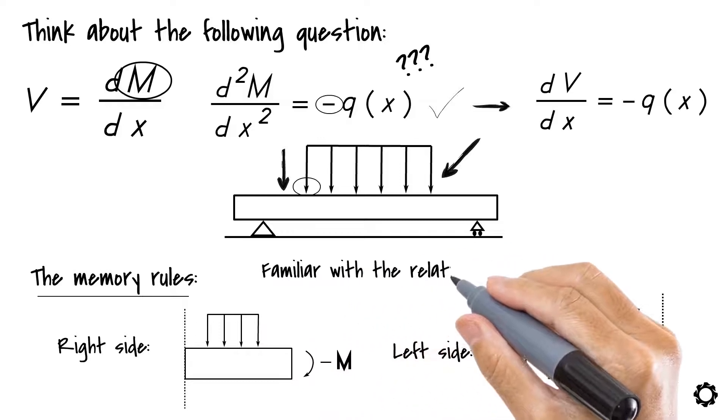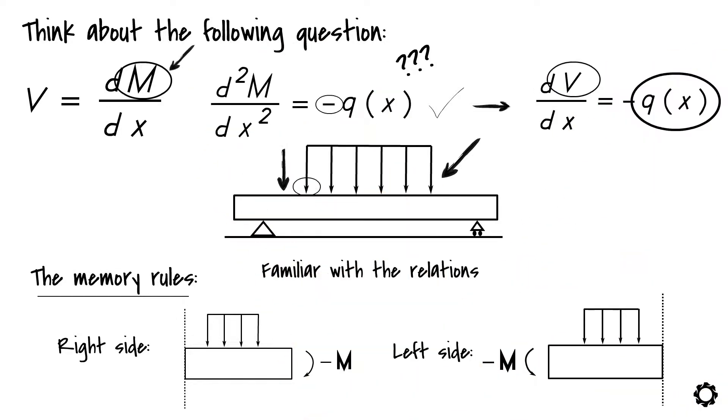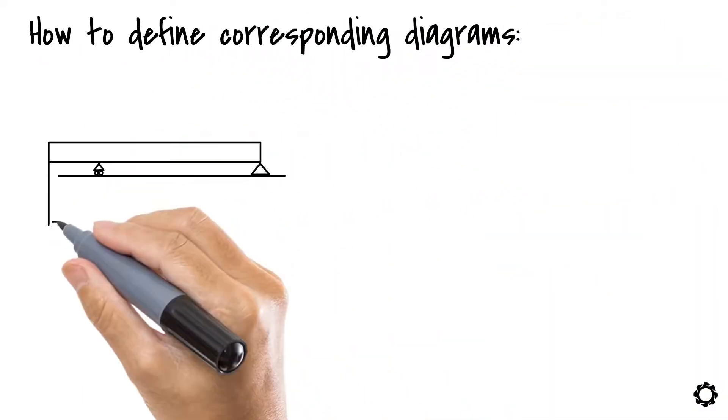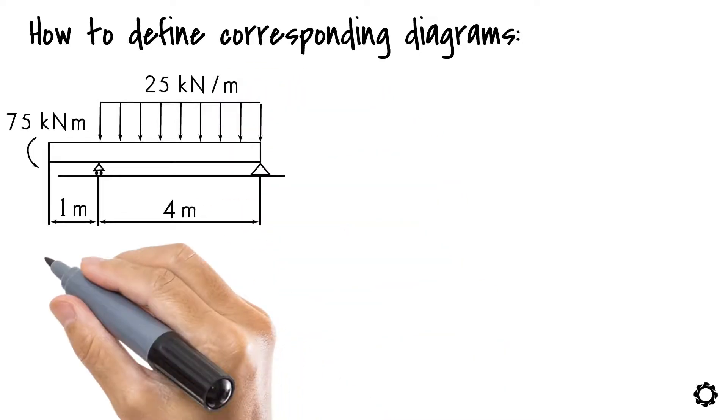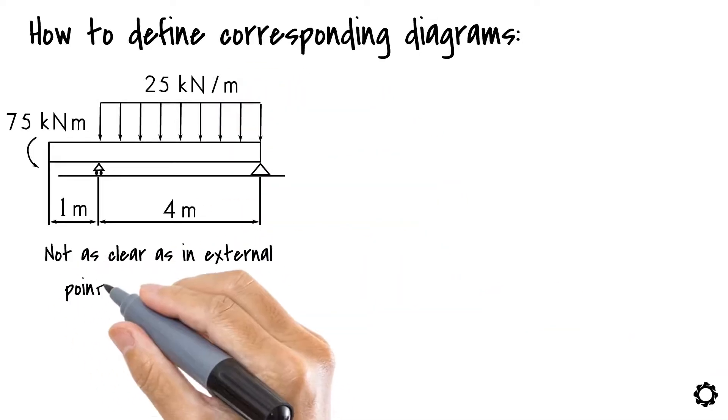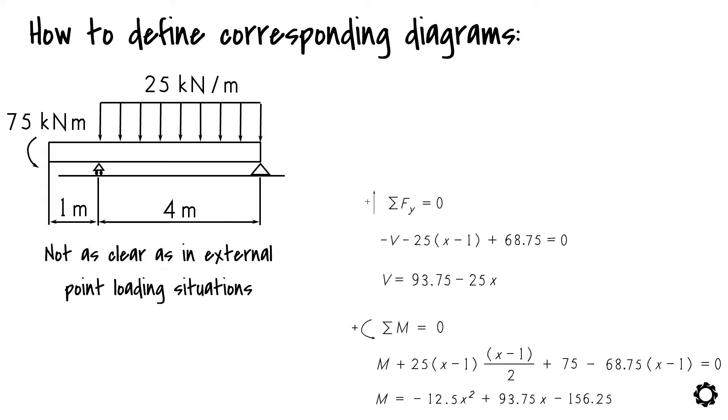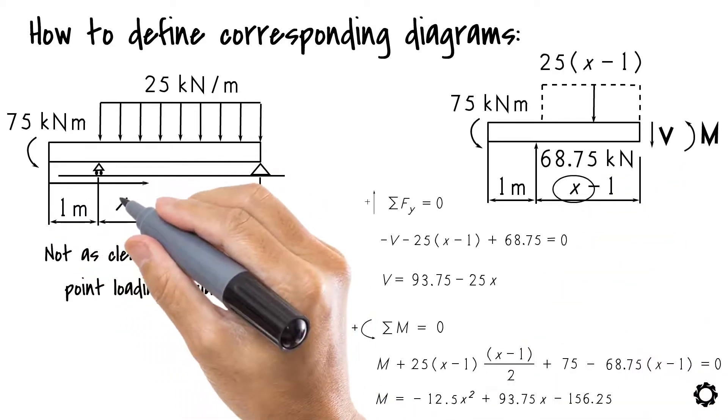Now that you are familiar with the relations between a distributed load, a shear force, and a bending moment, we can start to look at how to define corresponding diagrams in a situation where the investigated structure is subjected to a distributed load. As was mentioned, this is not as clear as in external point loading situations. Thus, we need to form shear force and moment equations for every investigated section of the structure as a function of x which is marked as an arbitrary point in the length of the structure.